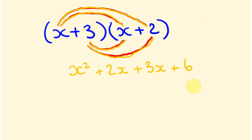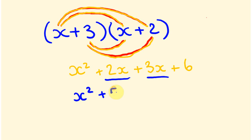Now you'll notice we have some like terms — terms with the same variable to the same power. The x squared is different from the x terms, but 2x and 3x are like terms. Adding them gives 5x. So our final answer is x squared plus 5x plus 6.